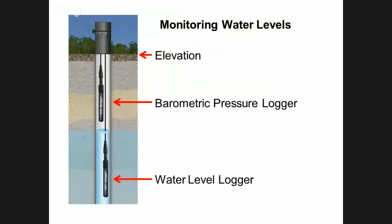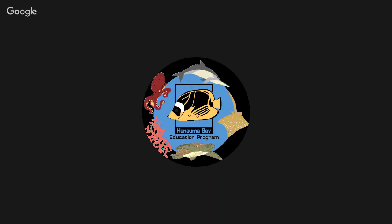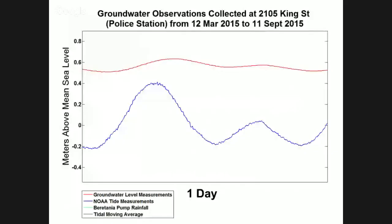To answer the first question, we installed monitoring devices — one that monitors barometric pressure and another that monitors groundwater level corrected for barometric pressure — all referenced to elevation relative to mean sea level. We installed these in four locations. Looking at one site across a day: this is a Honolulu semi-diurnal tide cycle with a high and a low high tide, and you can see how groundwater is influenced. Tidal efficiency is the ratio of groundwater amplitude to tidal amplitude — it shows how much groundwater is influenced by oscillations in the ocean surface.